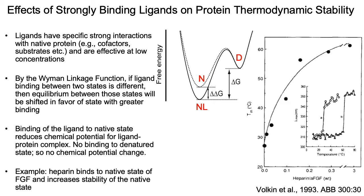Let's start by talking about protein stability in solution and about how strongly binding ligands affect thermodynamic stability. This is called the Wyman linkage function, which says if a ligand binds more to one state than another, the state with the bound ligand will be favored. If we add a ligand to the native protein that binds very strongly, the barrier between the native protein and the denatured state goes up because ligand binding to a protein state lowers the free energy, thereby favoring that state.